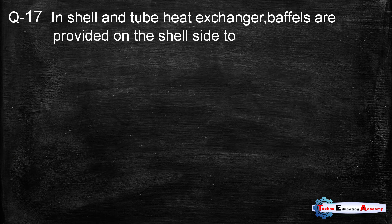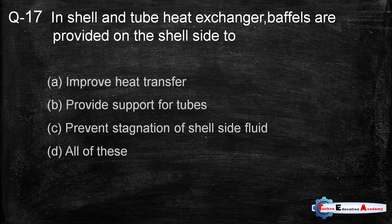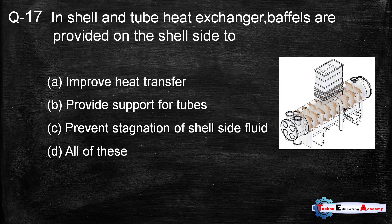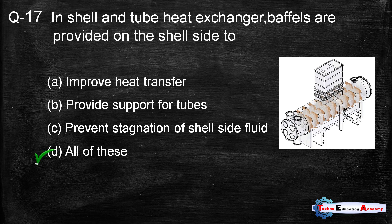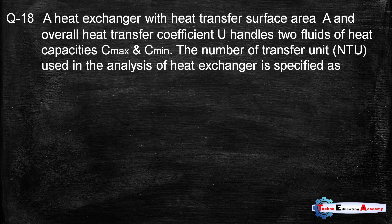Question number seventeen: In a shell-and-tube heat exchanger, baffles are provided on the shell side. Shell-and-tube heat exchangers are used in thermal power plants. The function of baffles is to improve the heat transfer rate by inducing turbulence, provide support for the tubes, and prevent stagnation of the shell-side fluid. So the right answer is option D.